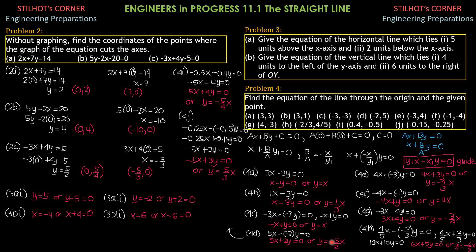For 4E, y1 = 4, x1 = -3: 4x - (-3)y = 0, so 4x + 3y = 0, or y = -4x/3. For 4F, y1 = -4, x1 = -1: -4x - (-1)y = 0, so -4x + y = 0, or y = 4x. For 4G, y1 = -3, x1 = 4: -3x - 4y = 0. Transposing: 3x + 4y = 0, or y = -3x/4.